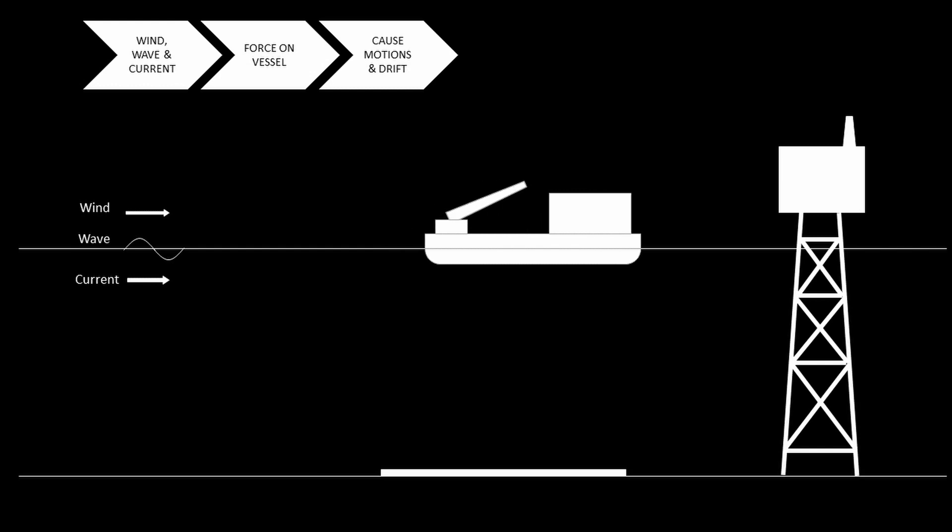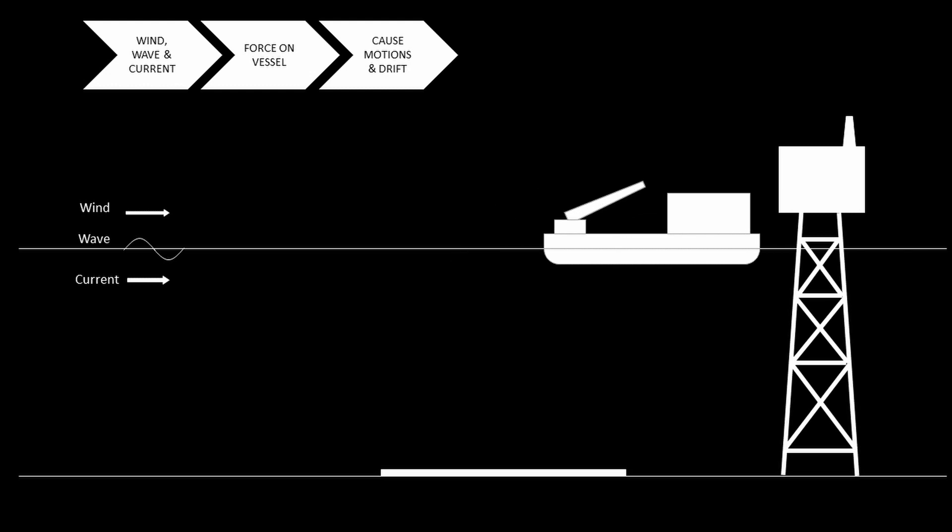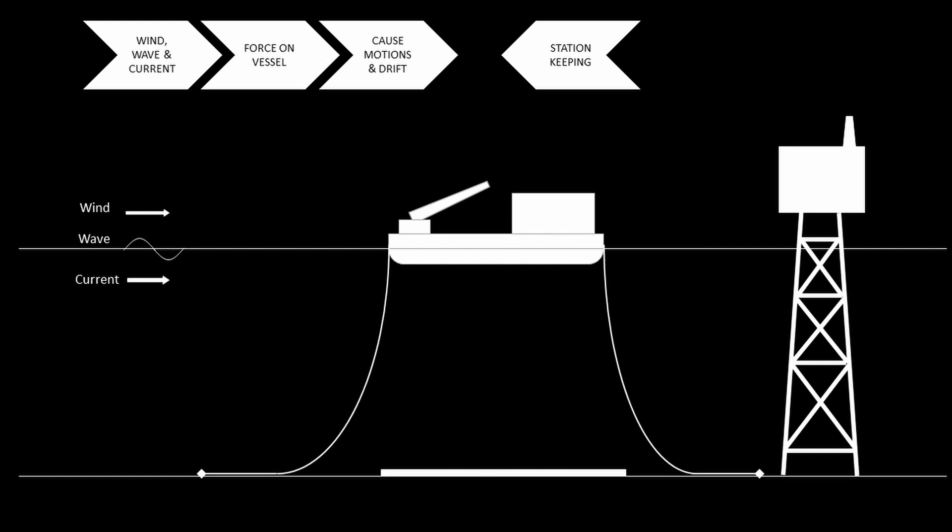A drifting vessel is dangerous, both to the personnel on board and also to the surrounding installations. If the vessel's motion is not properly restrained, it may collide into the surrounding structures. In order to restrain the motions, a proper station keeping arrangement has to be made.